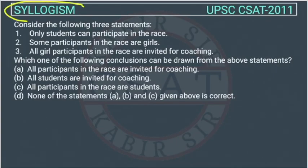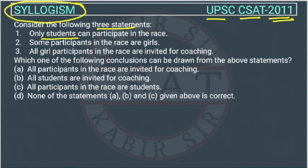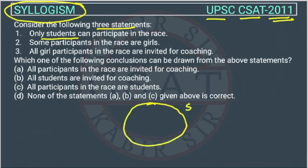This is a question from the syllogism chapter of reasoning, asked by UPSC in the 2011 paper. Consider the following three statements. First: only students can participate in the race. So in the Venn diagram, the race circle will be inside the student circle, since only students can participate.